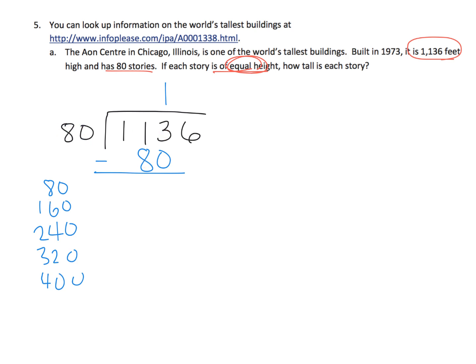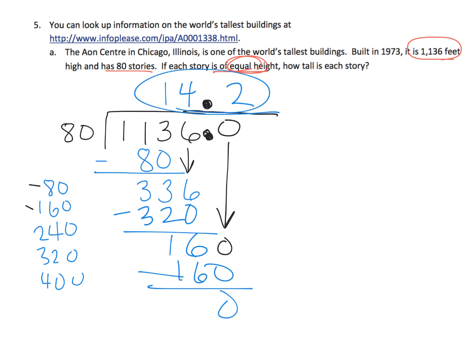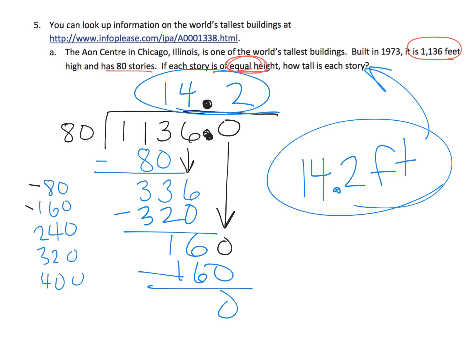One hundred thirteen tens divided by eighty goes one time. One hundred thirteen minus eighty gives thirty-three. Bring down the six to get three hundred thirty-six; that goes four times giving three hundred twenty, subtract to get sixteen. We think of sixteen as one hundred sixty tenths, place the decimal, and skip counting shows eighty goes into one hundred sixty two times. That gives one hundred sixty, nothing left over. Our quotient is 14.2 — each story of the Aon Center is 14.2 feet tall.